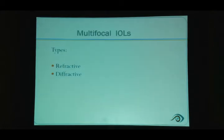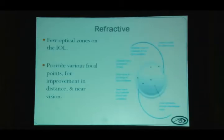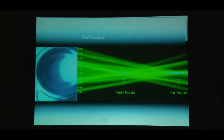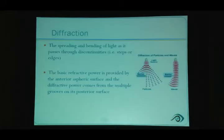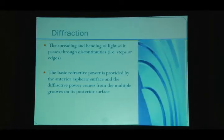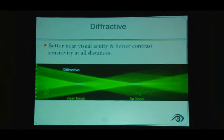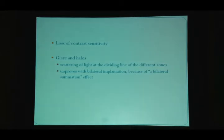Refractive IOLs use different refractive zones for different focal points. Diffractive IOLs bend light by means of steps or discontinuities on the posterior surface, producing sharper focal points compared to refractive IOLs — so glare and halos are better with diffractive IOLs. A slight loss of contrast sensitivity exists with both types. Glare and halos improve with bilateral implantation due to summation — patients perceive better images from both eyes — which is why we always insist the second eye is done promptly.